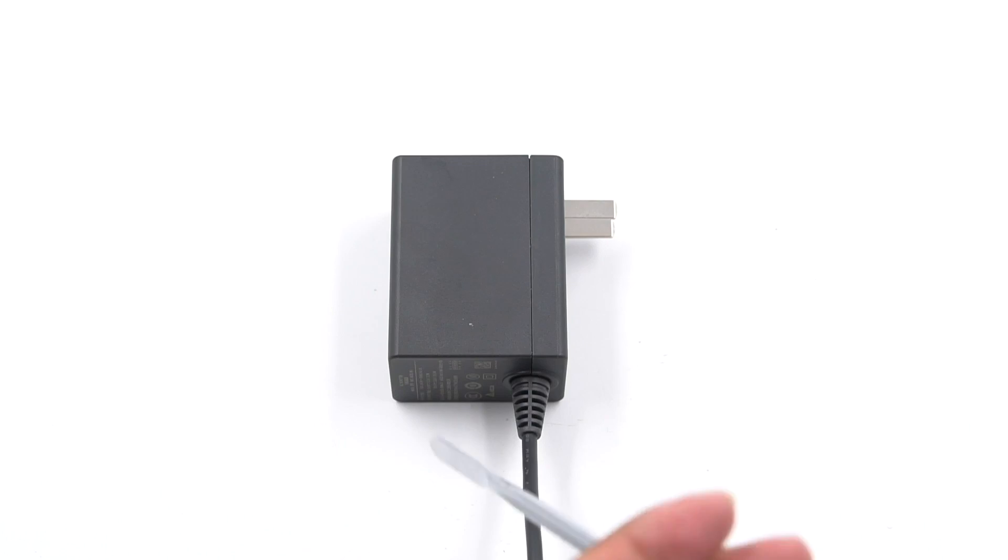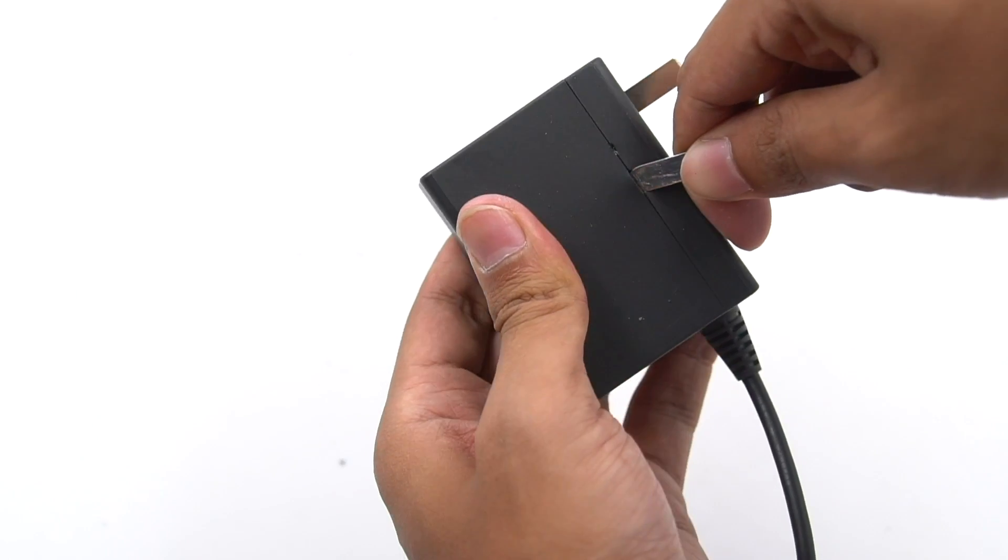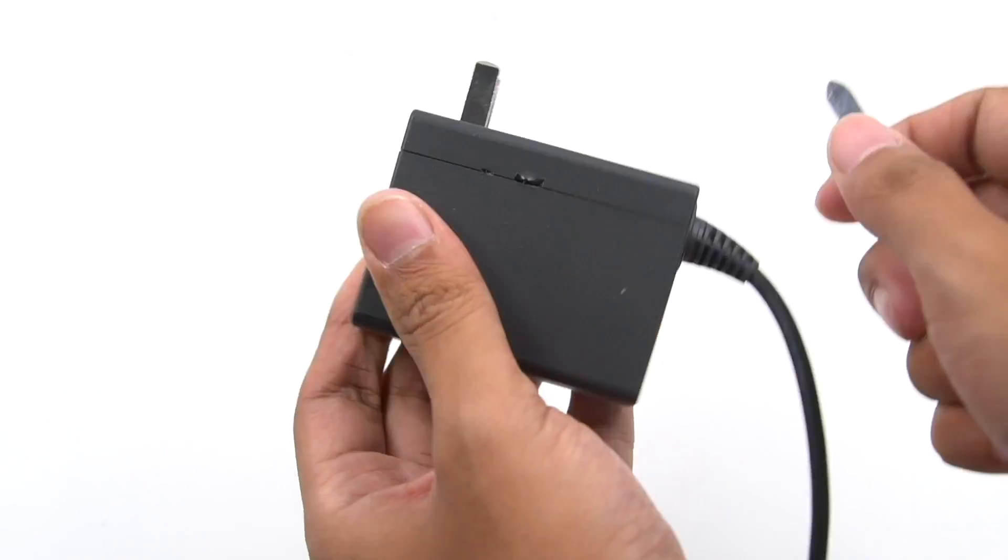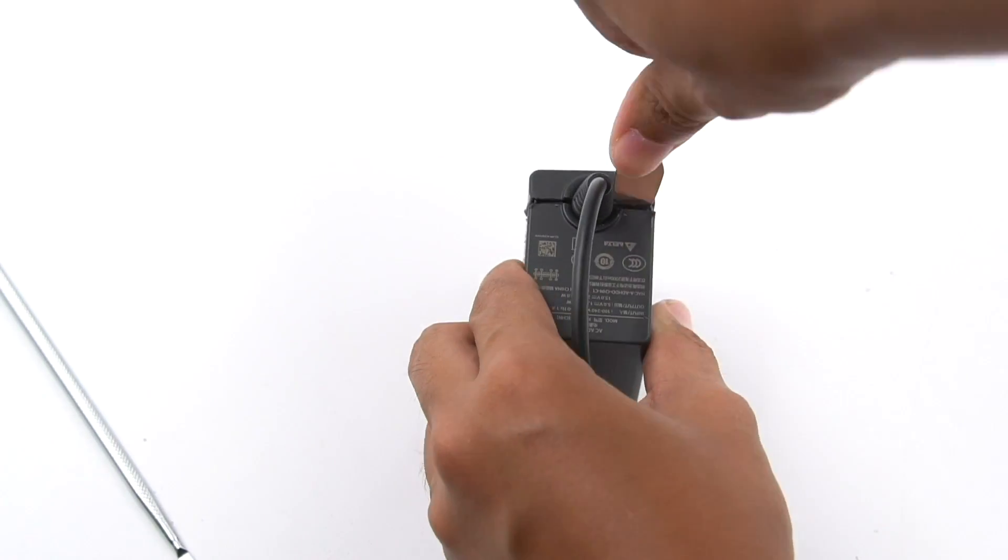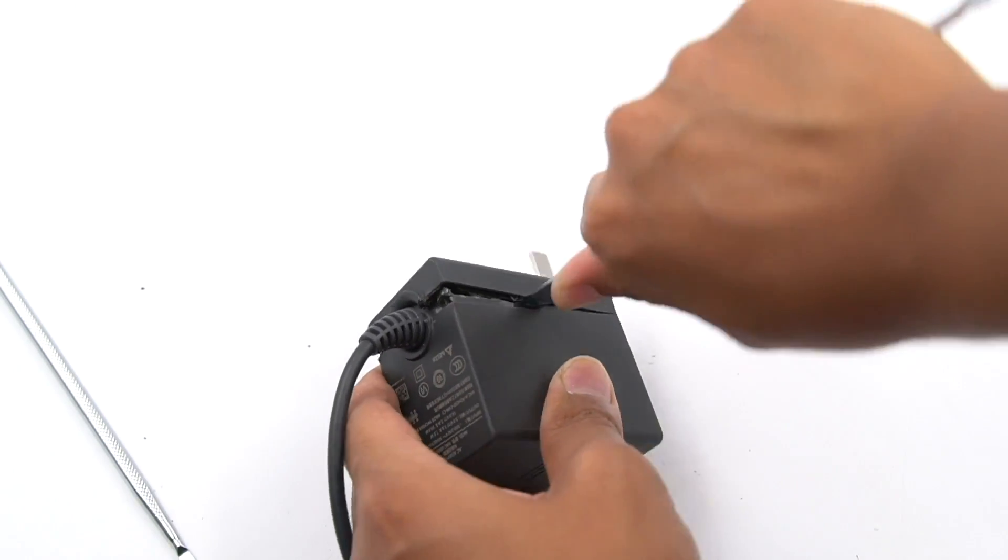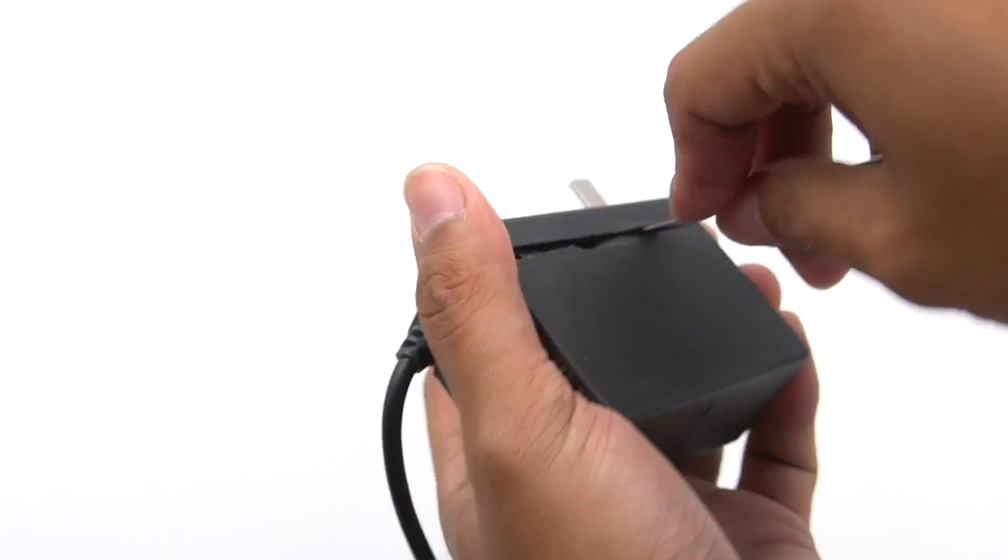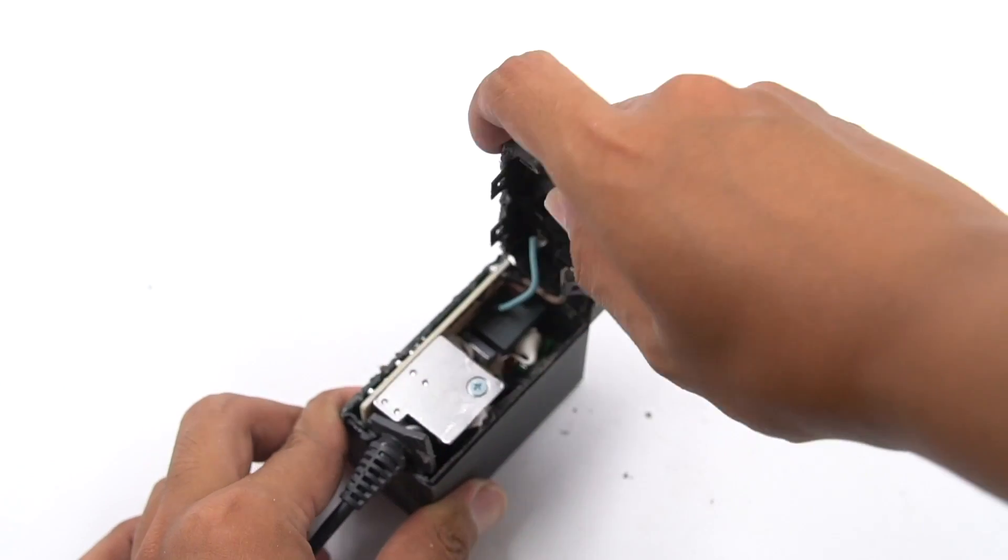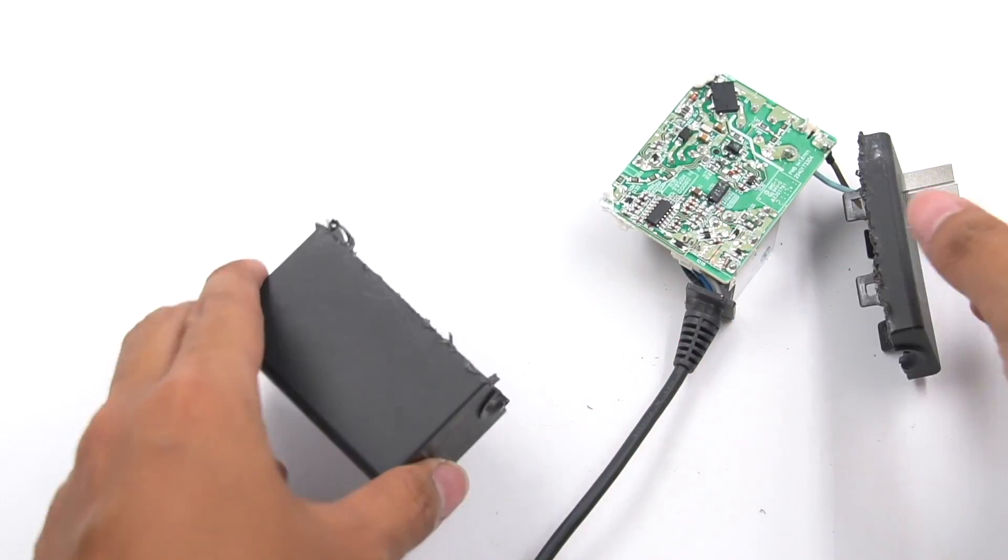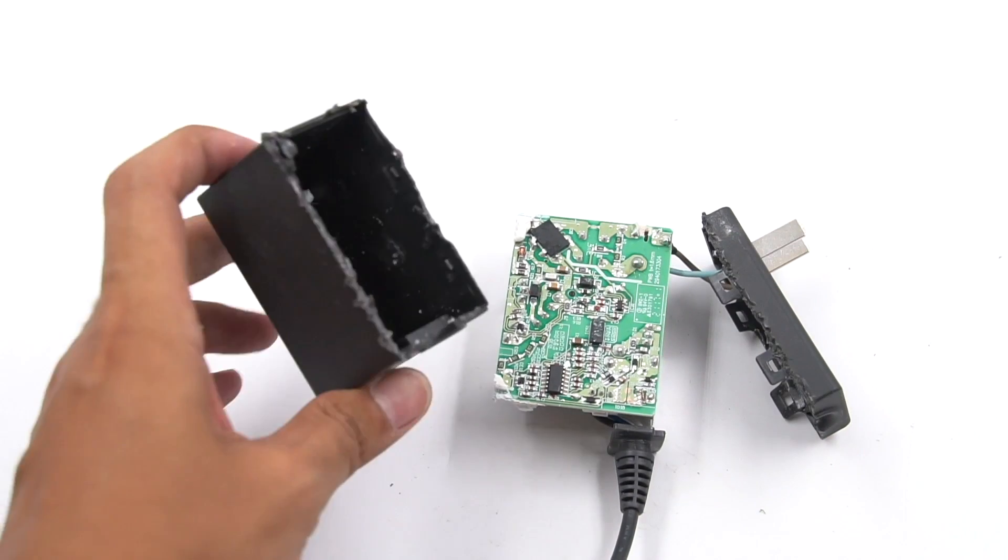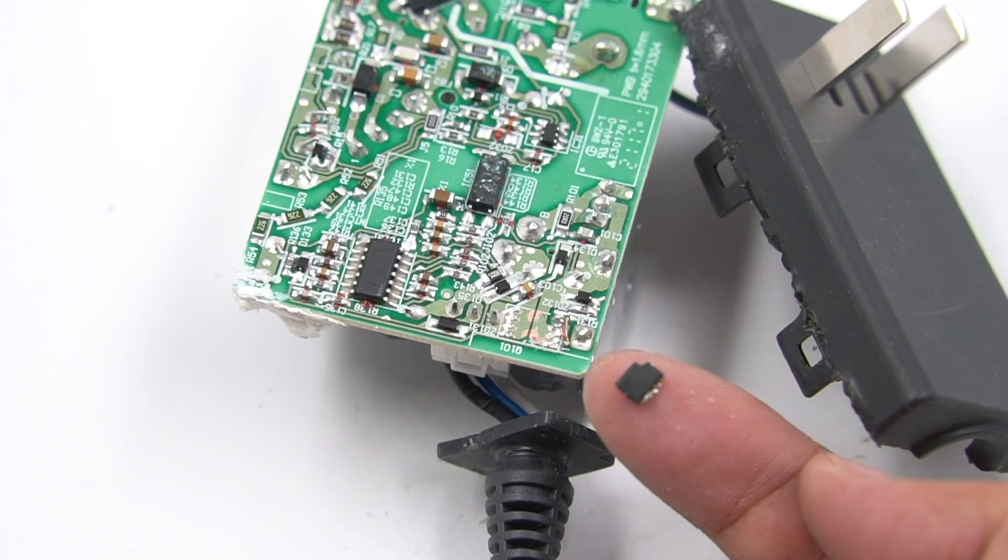After reviewing the charger, let's start to tear it down. The shell is very tough and is a little bit hard to open. Normally, it will be open at this time. But this one... Okay, finally, open it. But a smart chip was accidentally pulled off. We will analyze it later on.